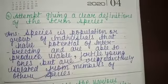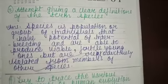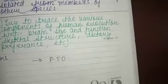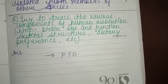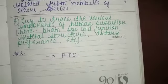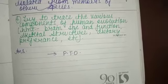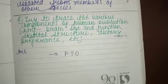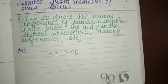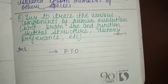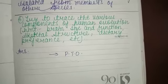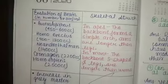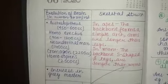Now: Try to trace the various components of human evolution. The hint includes brain size and function, skeletal structure, dietary preference, etc. So in this we will write the answer.